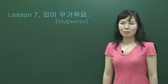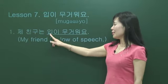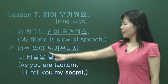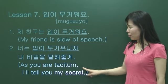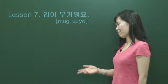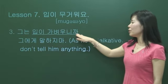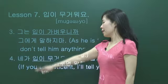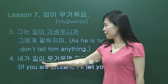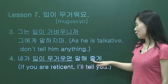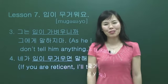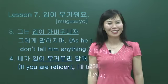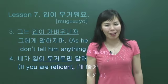Let's practice more with some sentences. 제 친구는 입이 무거워요. 너는 입이 무거우니까 — as you are taciturn, 입이 무거우니까, 내 비밀을 말해줄게. 그는 입이 가벼우니까 — 입이 가벼우니까 — don't tell him: 그에게 말하지마. 내가 입이 무거우면 말해줄게 — if you are reticent, 말해줄게. What about you? What sort of person are you? 입이 무거워요? 입이 가벼워요? I think you are 입이 무거운 사람.